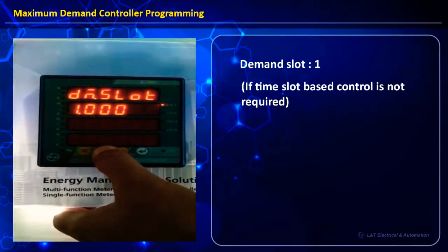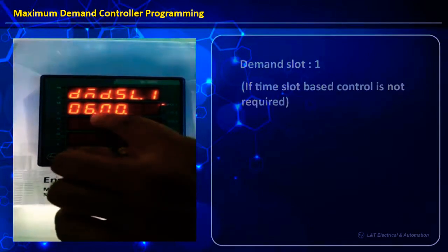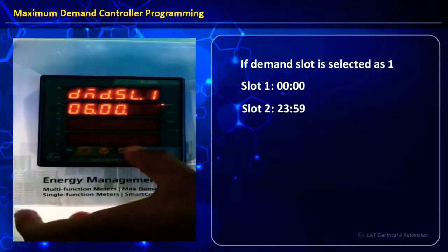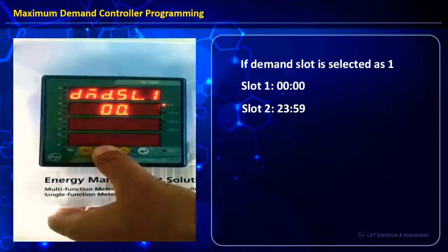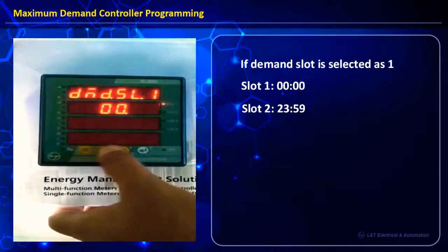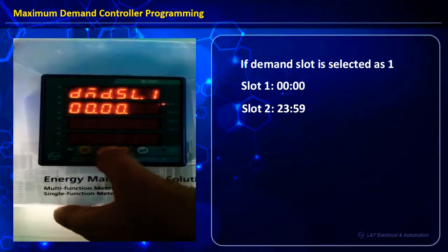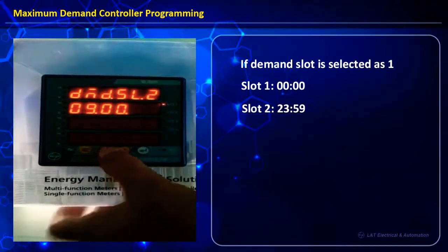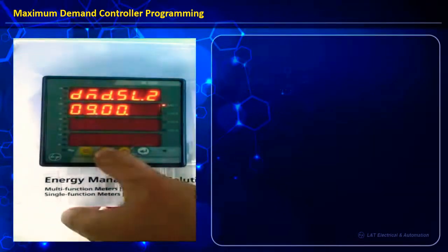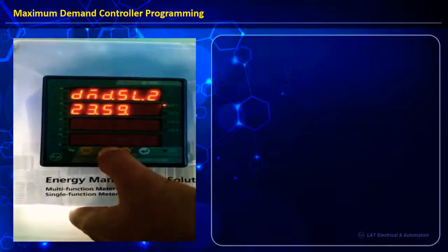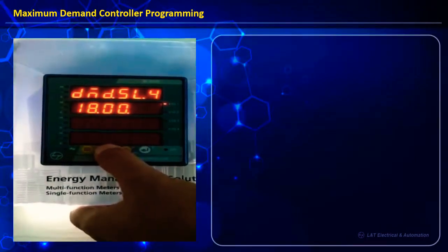For demand slots, if multiple TODs are required we can program accordingly. For our video we have taken slot 1 as 00:00 and slot 2 as 23:59, which covers the entire day's duration. Demand slots 3, 4, 5, and 6 can be kept as they are.